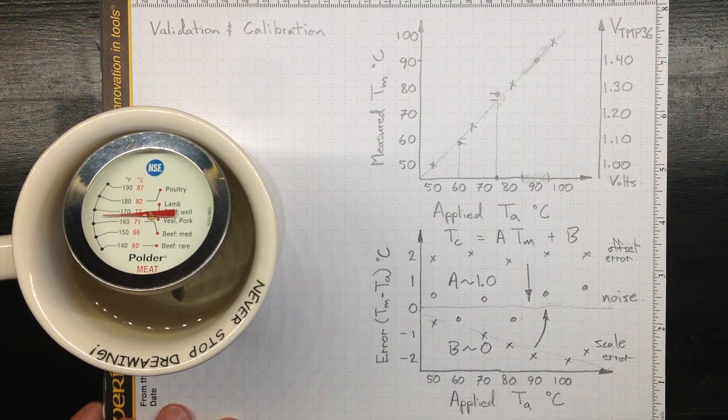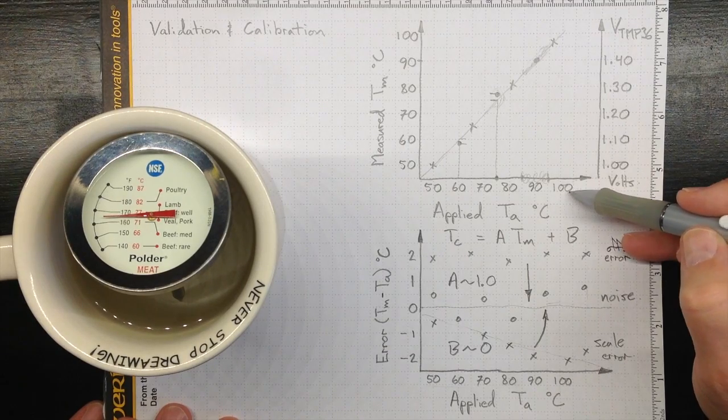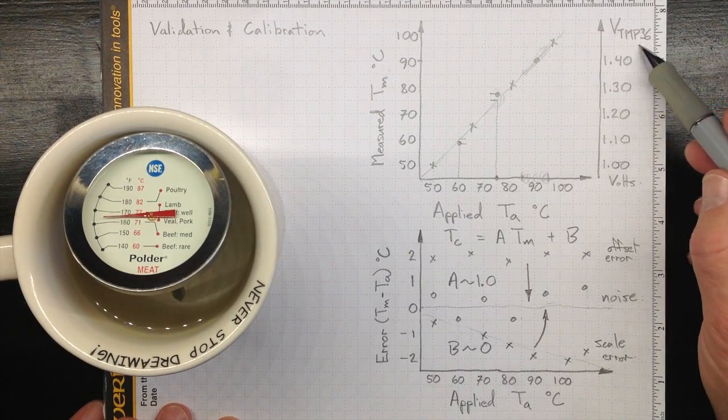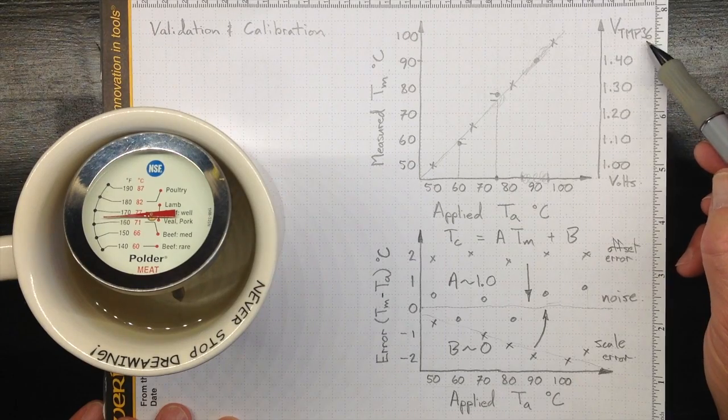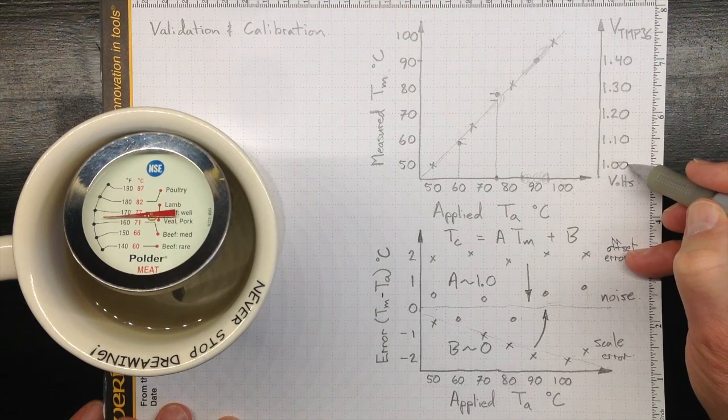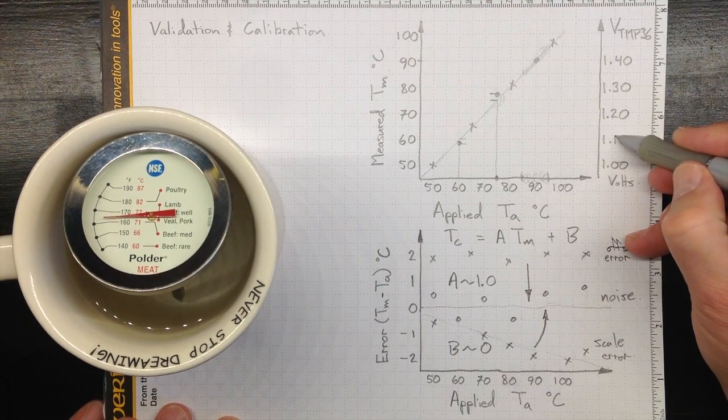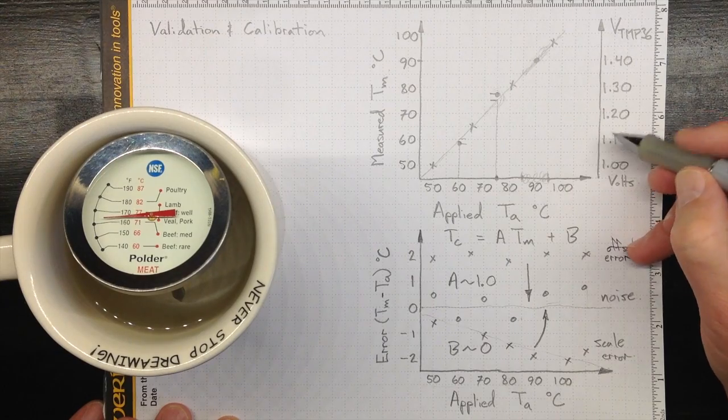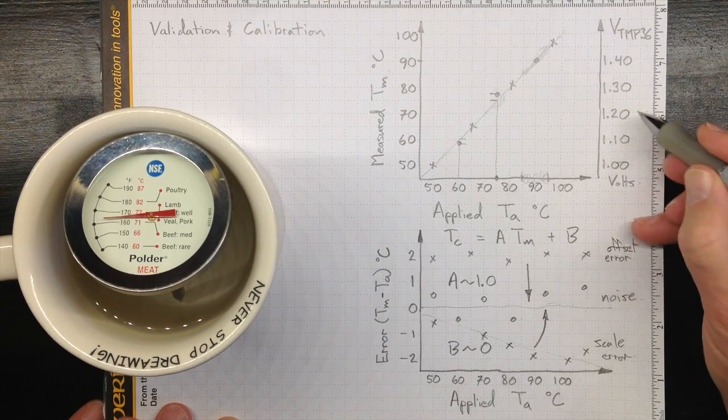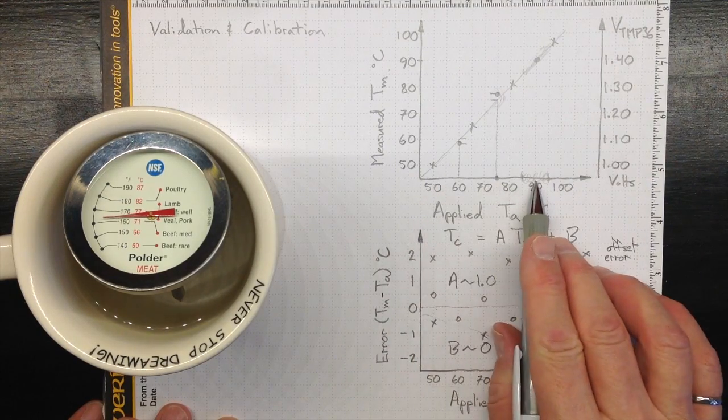We can apply this same approach to calibration if our measured temperature or measured quantity that we're interested in is coming out in some other different form. For example, as a voltage. If we use a TMP-36 temperature transducer, then the output voltage depends on the input temperature according to a relationship that results in a value of 1 volt for 50 degrees Celsius and an additional 100 millivolts, another 0.1 volt for every 10 degrees above that. So we'd see a voltage reading of 1, 1.1, 1.2, 1.3, 1.4 as we went from 50 up to 90 degrees Celsius.